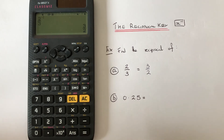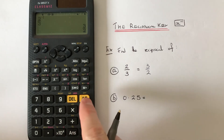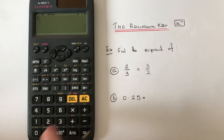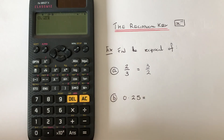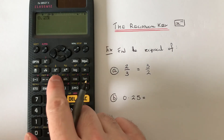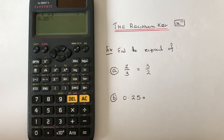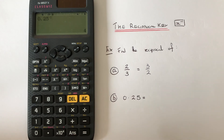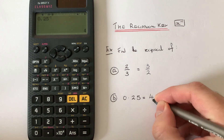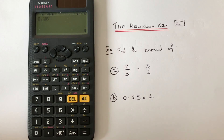Now let's do the second example. This time we've got 0.25, so we type in 0.25 and then press the reciprocal key and press equals to get the answer of four. Thanks for watching guys, see you next time.